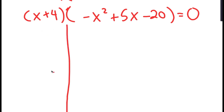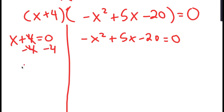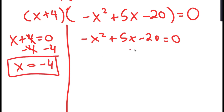So I get two equations from this: x plus 4 equals 0, and negative x squared plus 5x minus 20 equals 0. For x plus 4 equals 0, all we have to do is subtract 4 on both sides, and we get x is equal to negative 4.